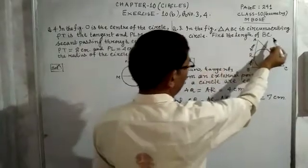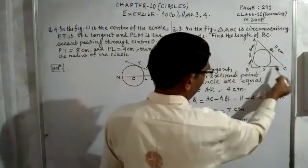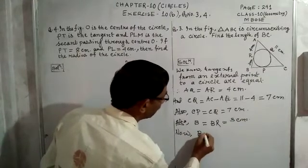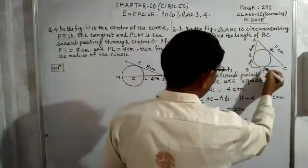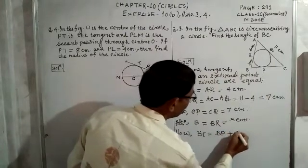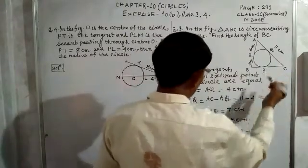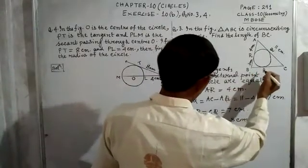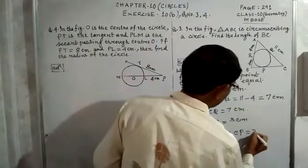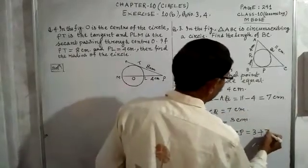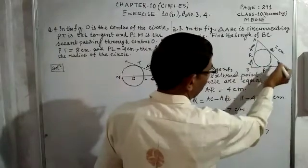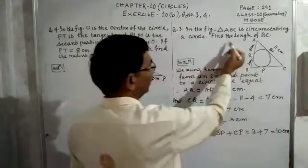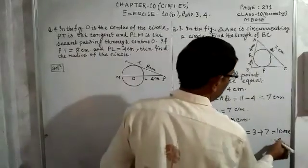Now it is easy to find the length of BC. BC is equal to BP plus CP. BP is 3 cm and CP is 7 cm, so 3 plus 7 is equal to 10 cm. That is the answer. The question asks for the length of BC, so BC is equal to 10 cm.